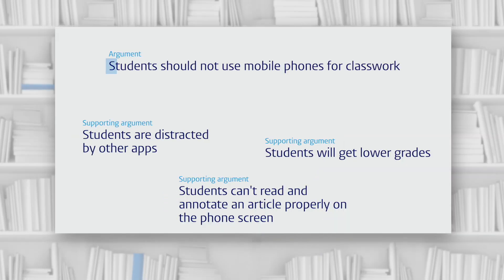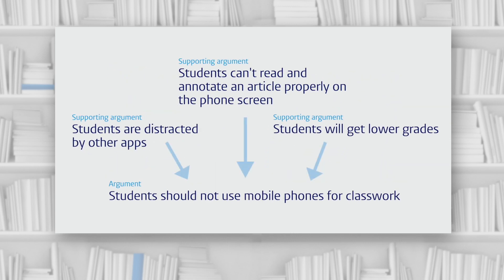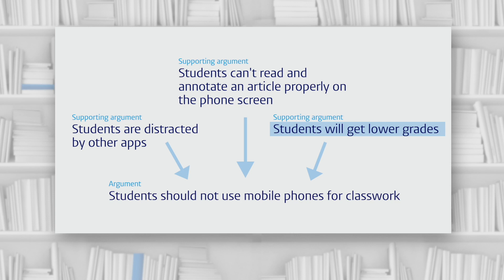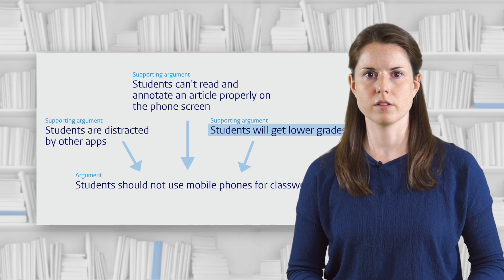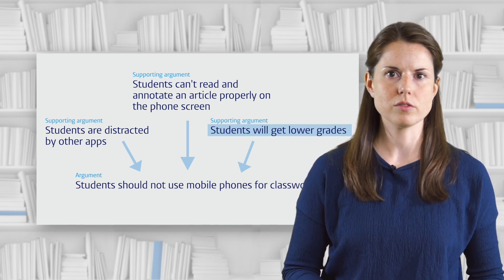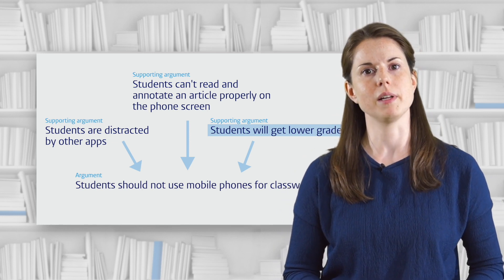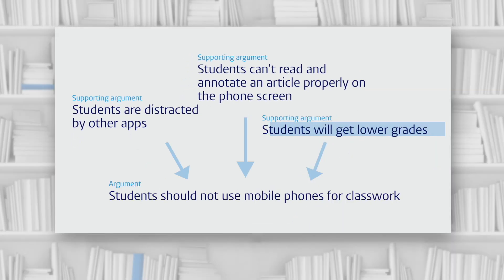This is the point that I'm trying to argue — this is where our argument is heading. The other three points are arguments that all contribute to the overall point we're trying to argue, so let's represent that visually. Now let's look at the logical connections between these three arguments. Students will get lower grades is a bit of a different argument from the other two. Being distracted and not being able to read and annotate properly are direct effects of using a mobile phone for classwork, but getting lower grades is itself a result of being distracted and not being able to read or annotate the article properly. So let's change this around to show that logical connection.